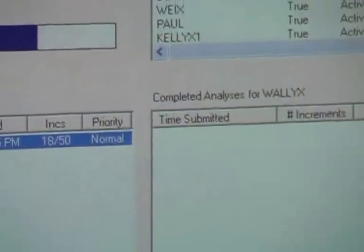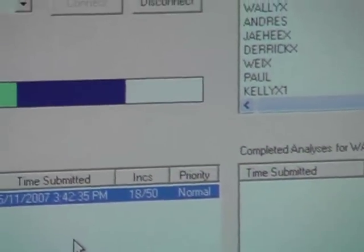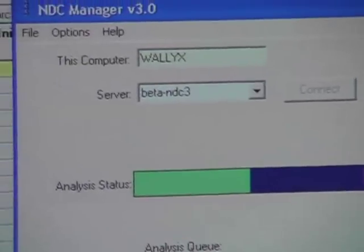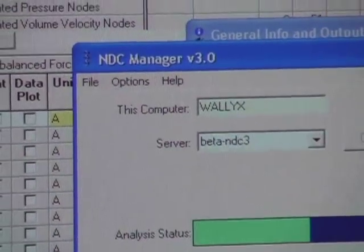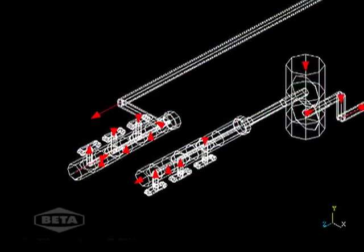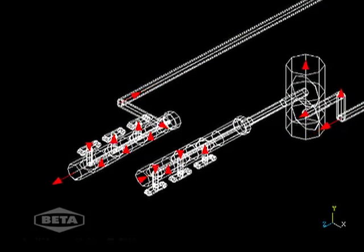For modeling pulsations, we recommend using time domain analysis. This type of algorithm is more accurate than the older approach that uses frequency domain analysis. Beta pioneered time domain analysis in the 1990s and employs this technique on all pulsation studies.